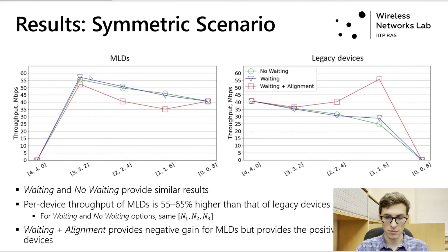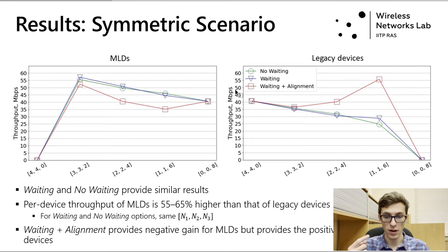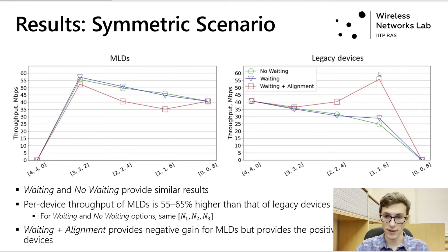Our results also show that the probability of winning channel access contention is low after restarting back-off when at least one legacy device is present. A legacy device needs only one back-off counter to expire, while an MLD needs both of its back-off counters to expire to perform synchronous transmission. This explains the throughput spike for legacy devices in the case 1-1-6: the fewer legacy devices there are in the network, the less contention there is between them and the more throughput they get.